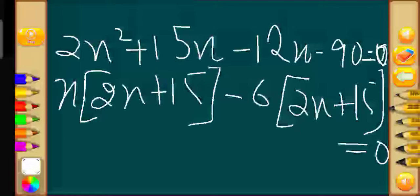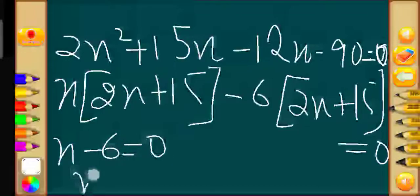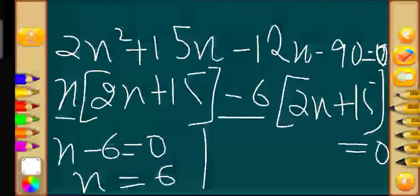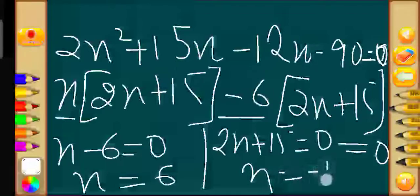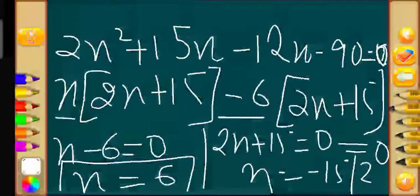So we get (x minus 6)(2x plus 15) equals 0. Therefore x equals 6, or x equals minus 15 by 2. Since the number of articles cannot be negative, the valid value is x equals 6. So the answer is 6 articles. The question is complete. Note that Exercise 4.3 on completing the square method is cut from our syllabus for Term 2, so we will do Exercise 4.4 next. Thank you, students.